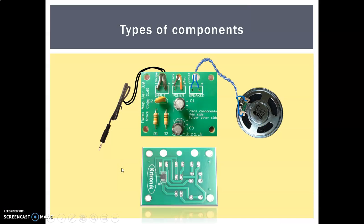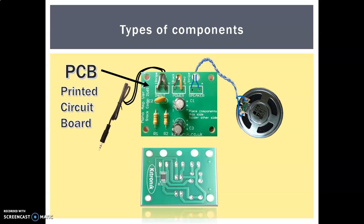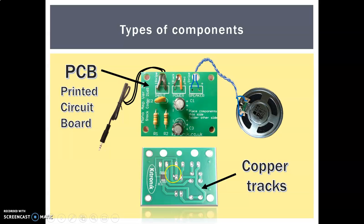This is the PCB that we use in the Year 9 project, which is for an MP3 speaker — like a phone speaker. This is the PCB, or printed circuit board. It's a plastic-based board, and as you can see at the bottom, we have the copper tracks. These are sandwiched between layers of plastic, and that allows the electricity to move around between the components.